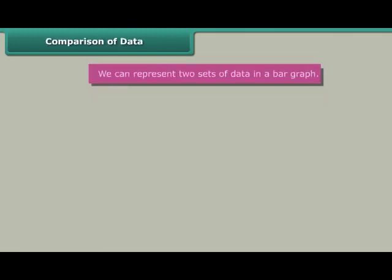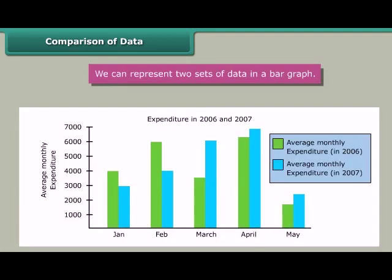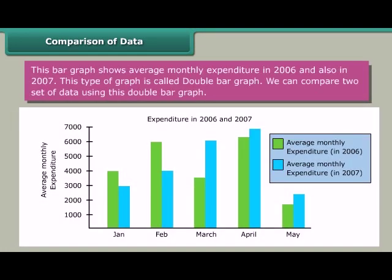Comparison of data. We can represent two sets of data in a bar graph. This bar graph shows average monthly expenditure in 2006 and also in 2007. This type of graph is called a double bar graph, and we can compare two sets of data using it.